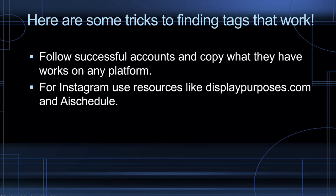For Instagram, use resources like displaypurposes.com. It's free — you go in there, type in a relevant keyword to your post, and it comes out with a bunch of hashtags. You can pick the ones you want or copy them all and paste them. Also one that I like is AI Schedule — they do a great job with hashtag research and you're also able to schedule your posts. The free account is about five posts a month, and the paid account is only seven dollars. I think AI Schedule is a really great resource, same with Display Purposes — I use them both.